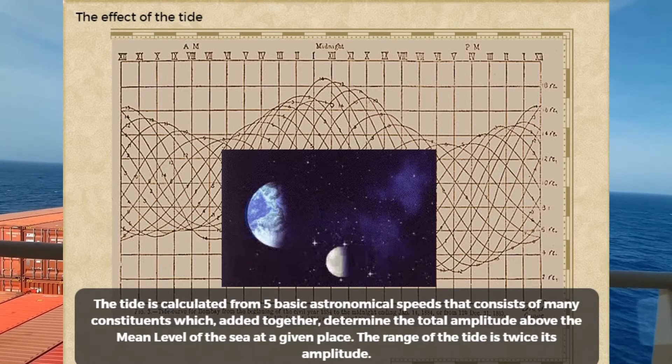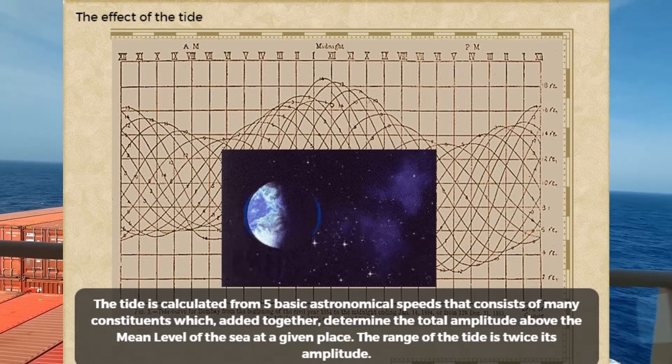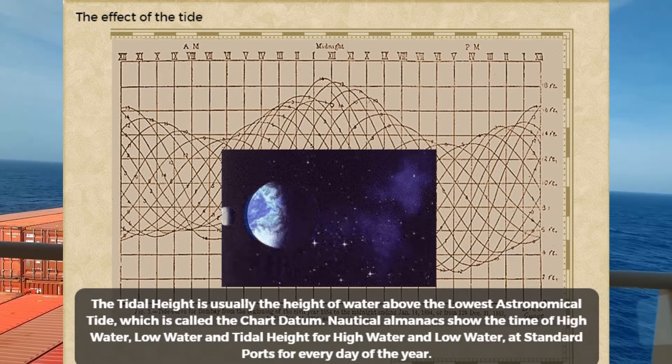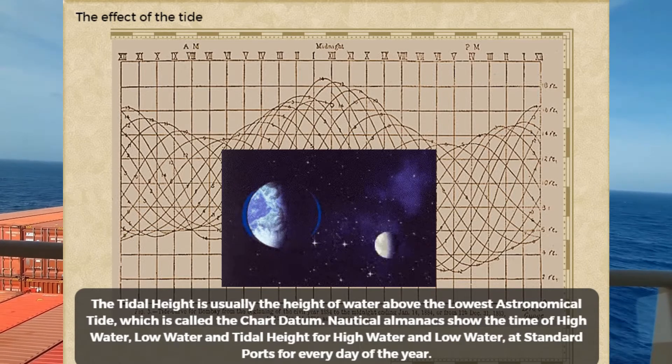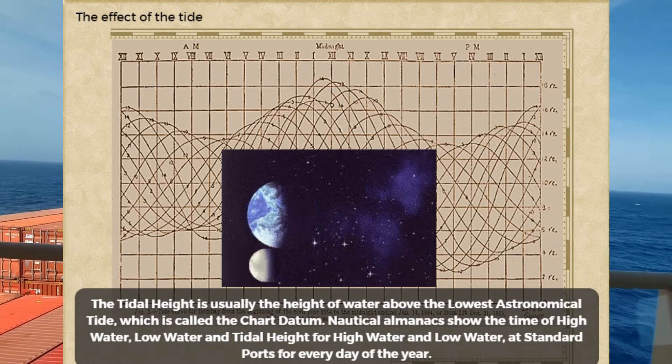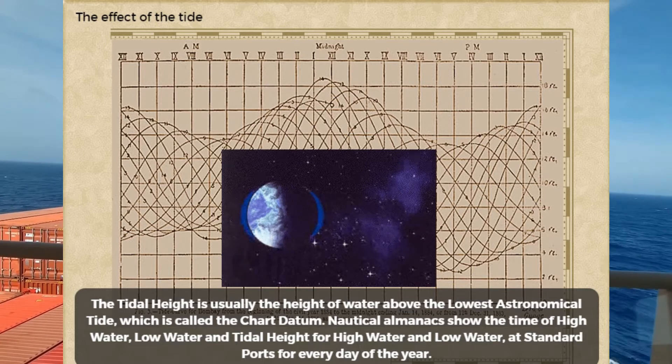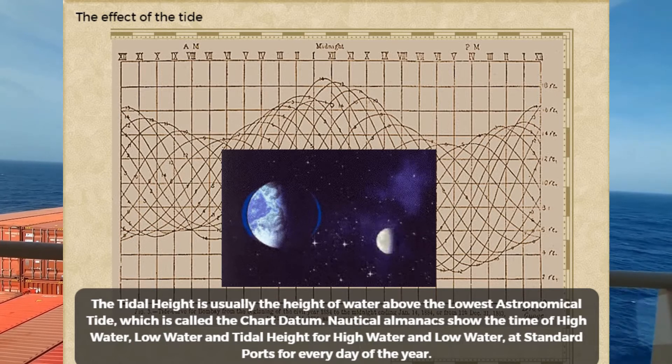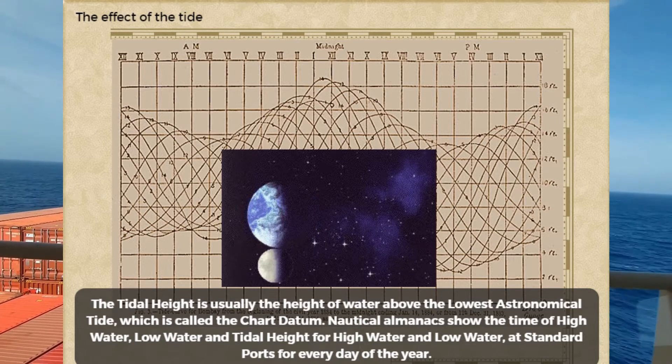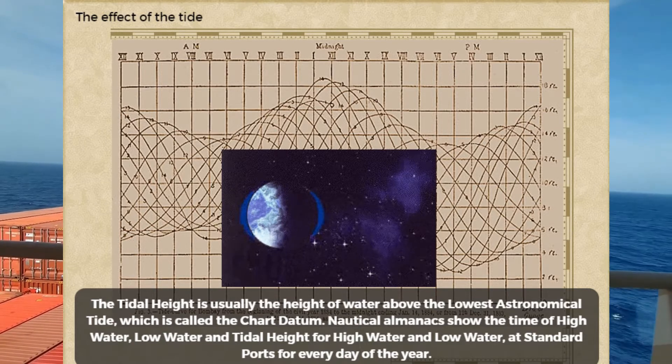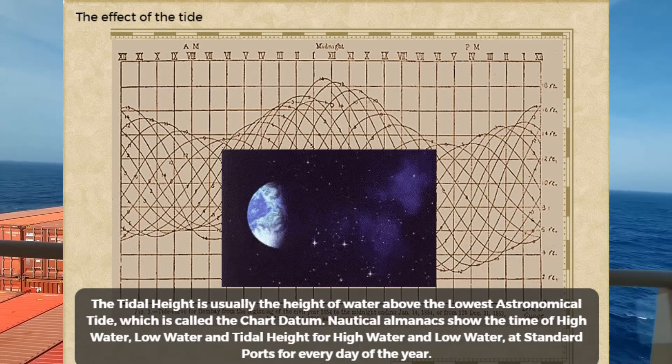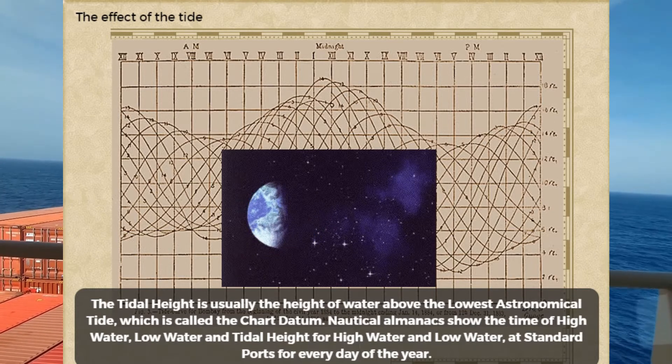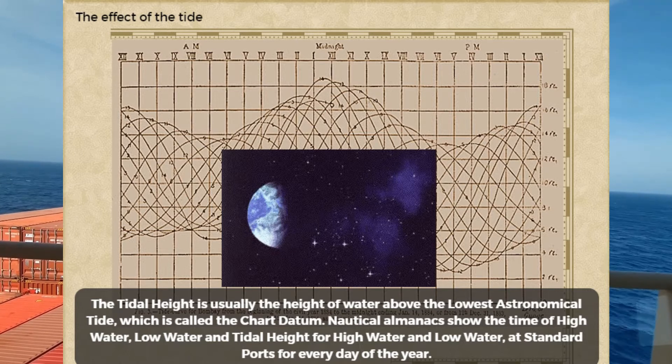The range of the tide is twice its amplitude. The tidal height is usually the height of water above the lowest astronomical tide, which is called the chart datum. Nautical almanacs show the time of high water, low water, and tidal height for high water and low water at standard ports for every day of the year.